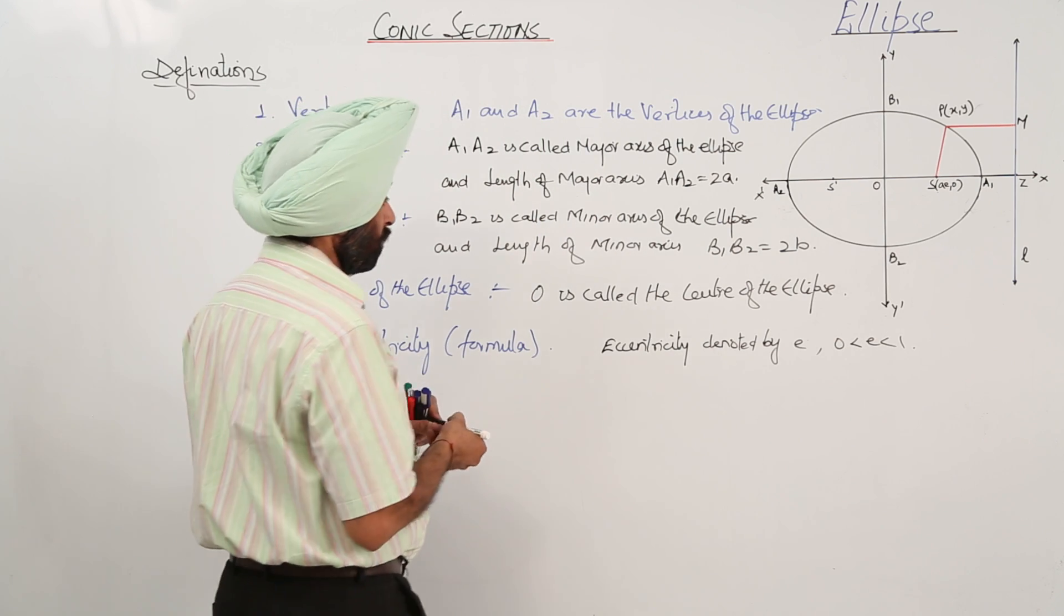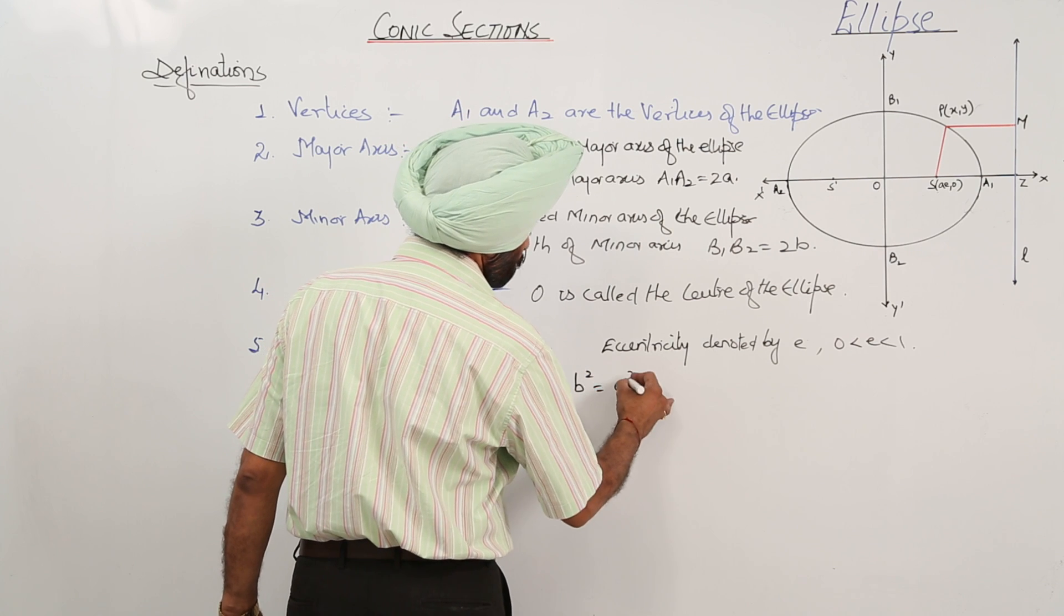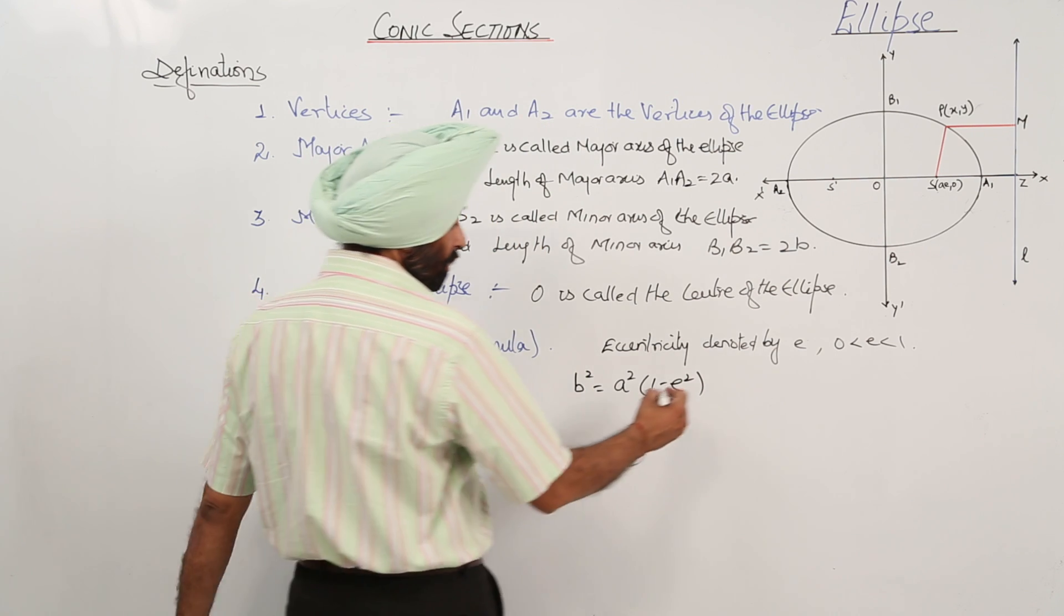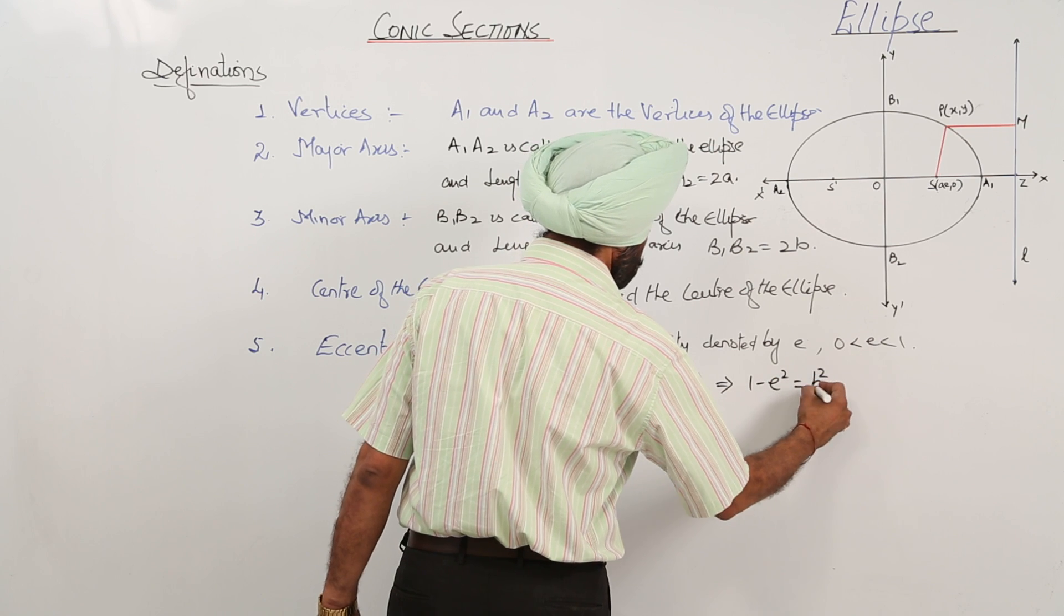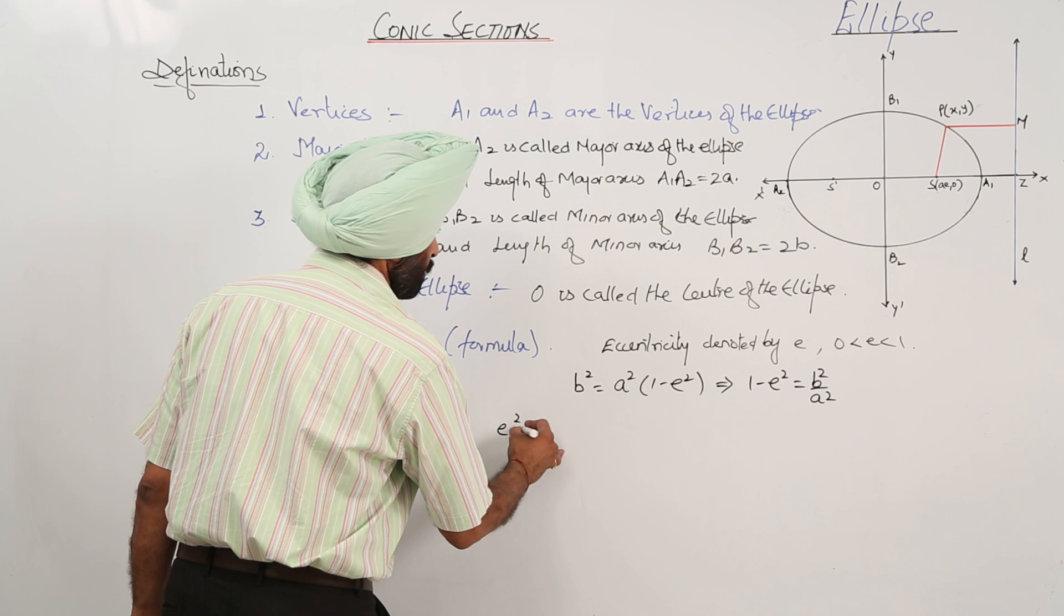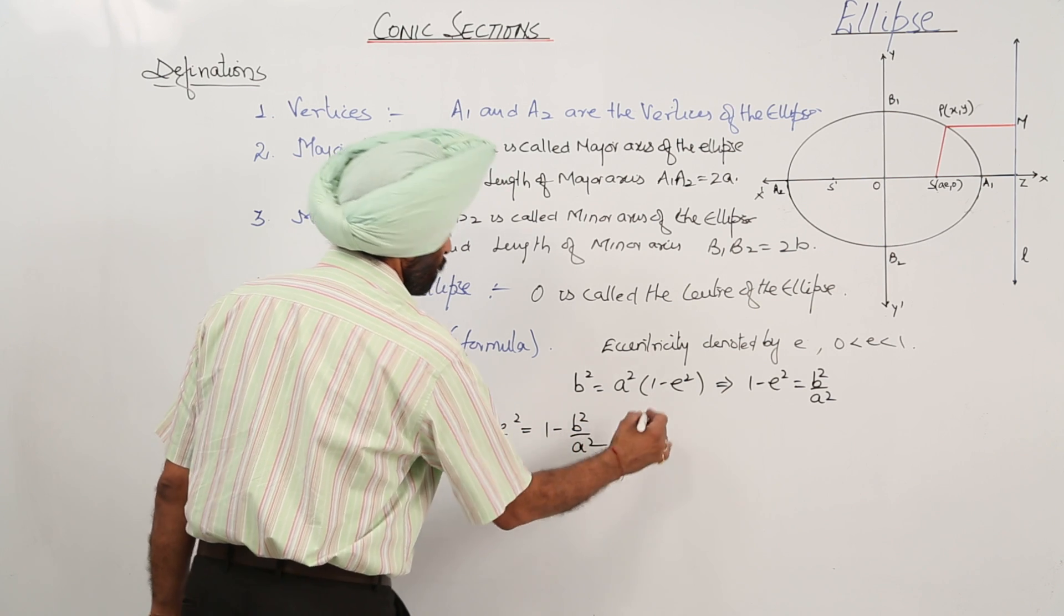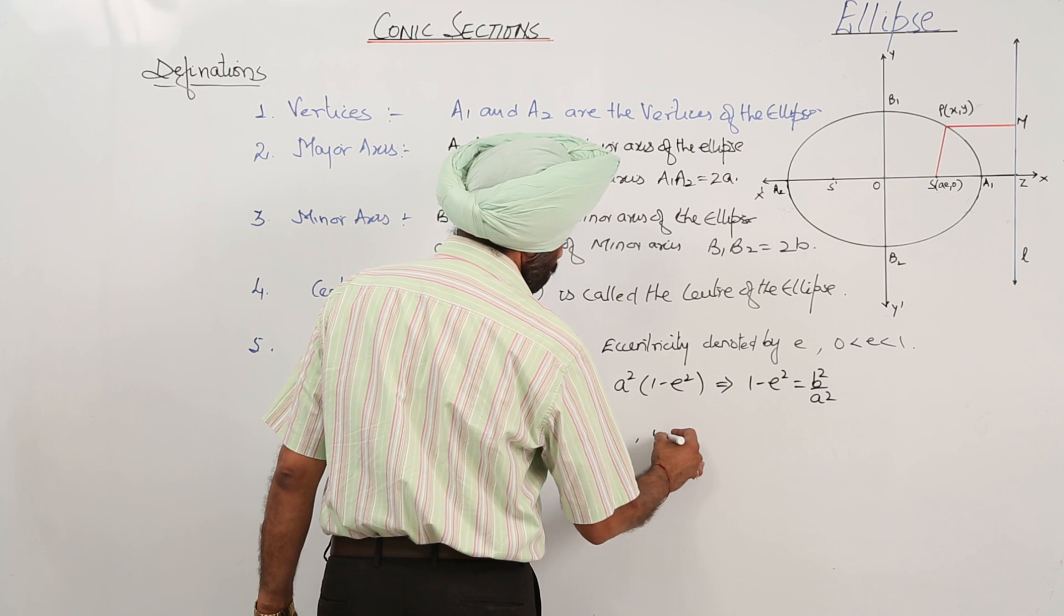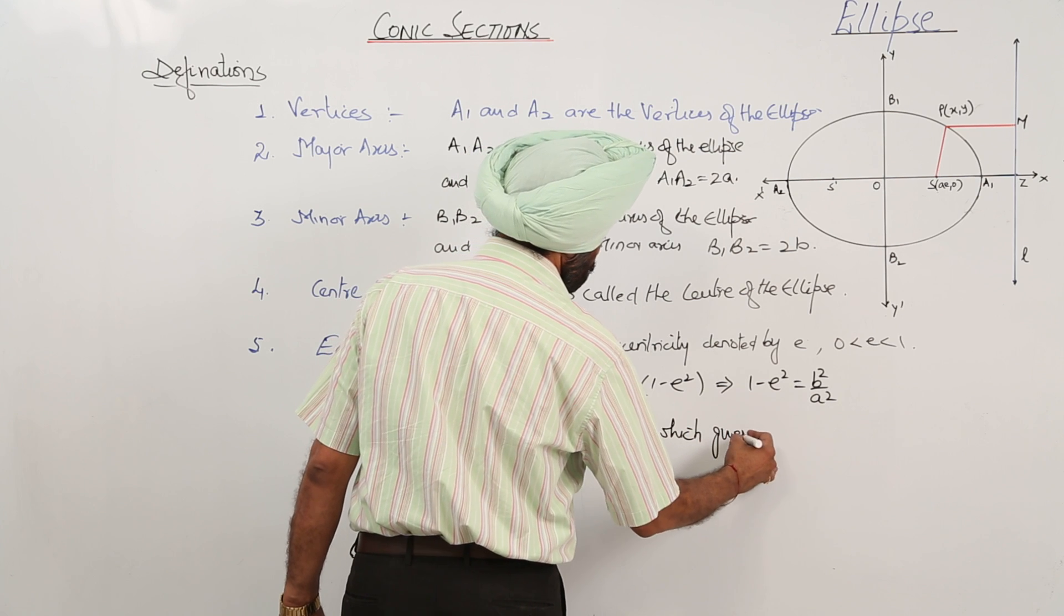We have to use a formula. We have taken b² is equal to a² in the bracket 1 minus e². This can be written as 1 minus e² is equal to b² upon a², or e² is equal to 1 minus b² upon a², which gives eccentricity.